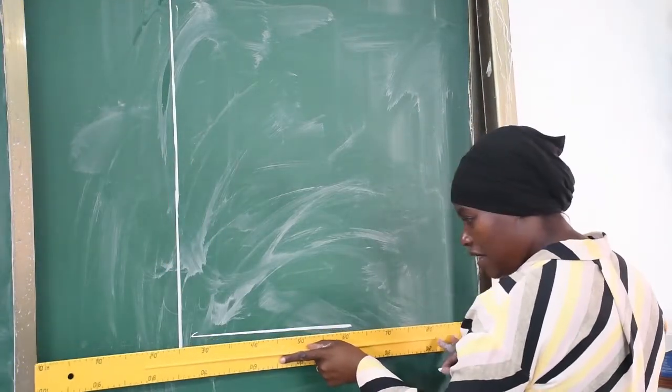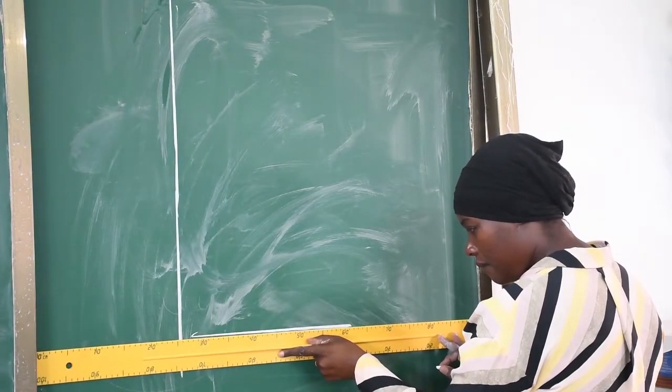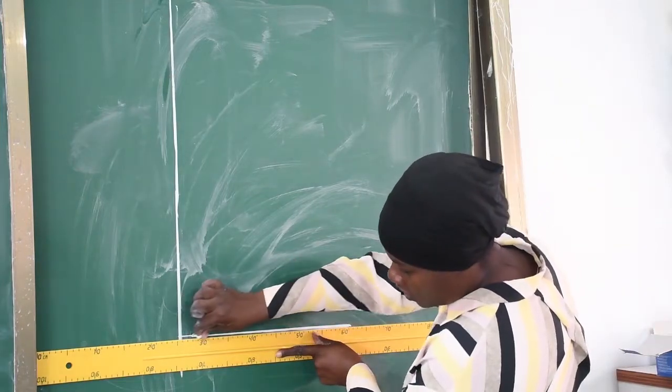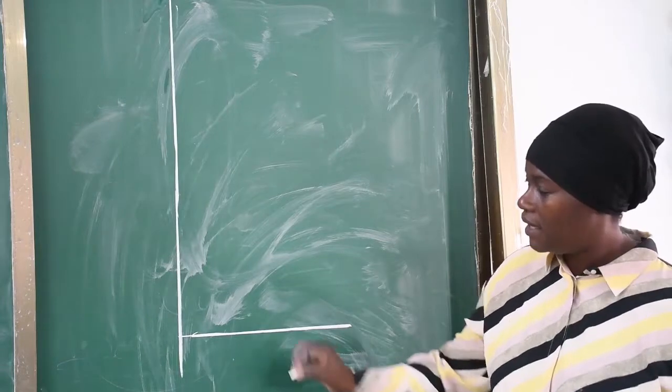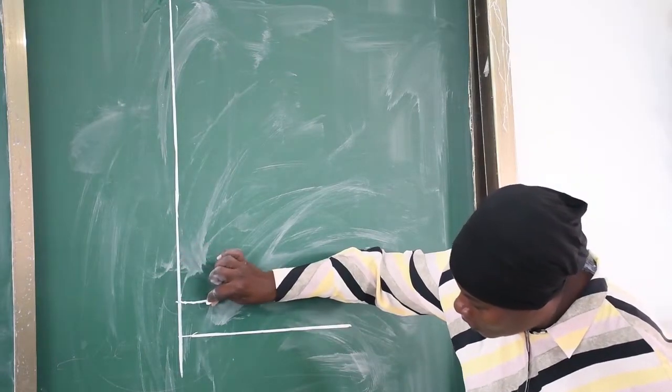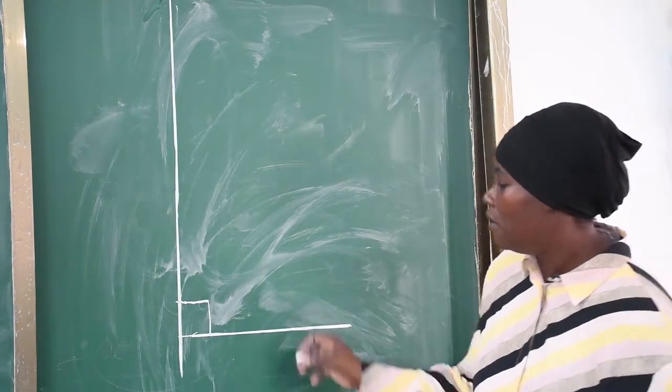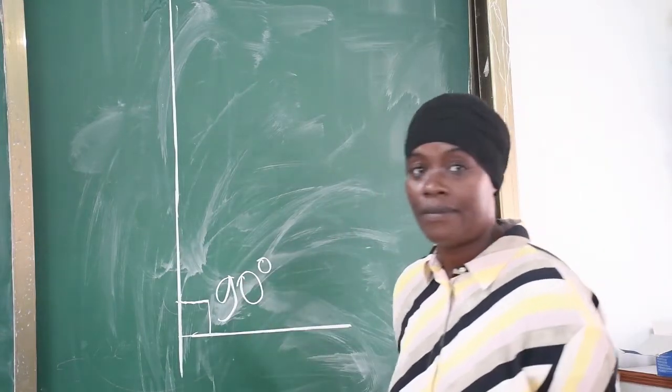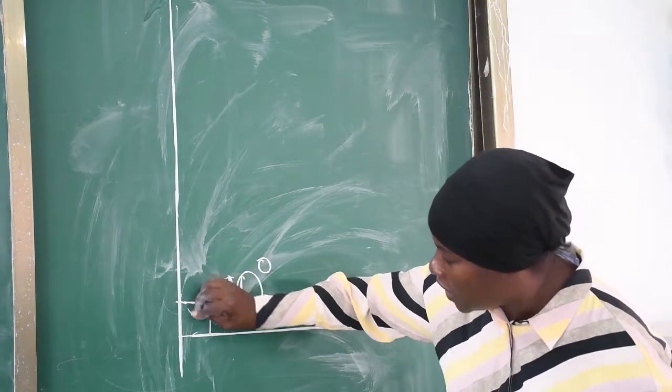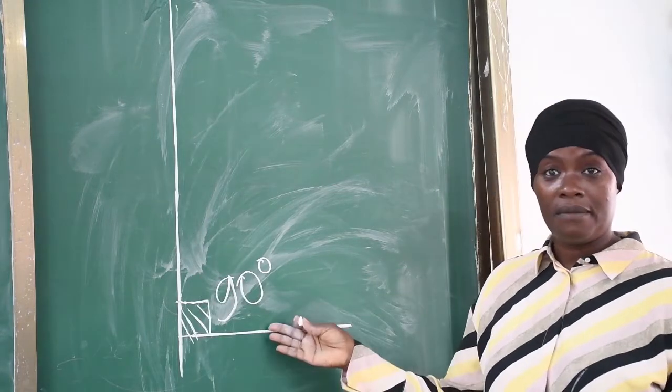The point where they join together, the corner, we are going to call this a right angle or a 90 degree angle. This is what we call the right angle. See? It's easy.